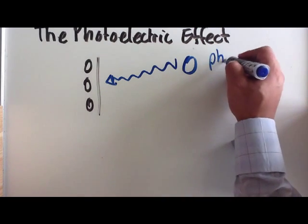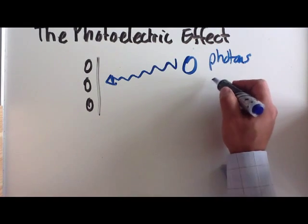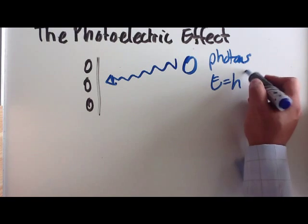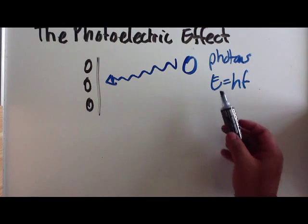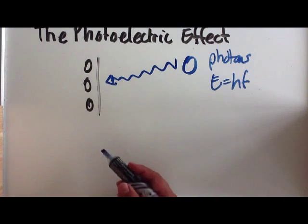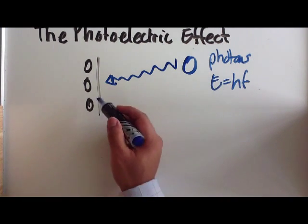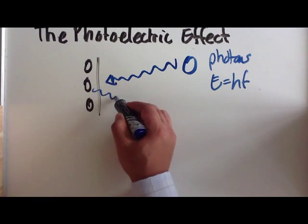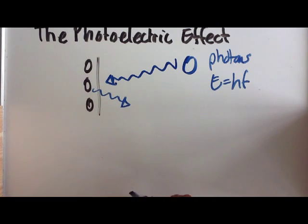And each of these photons has an energy associated with it and an accompanying frequency as well. One photon coming in, if it has enough energy, will release one electron. And this electron is then known as a photoelectron.